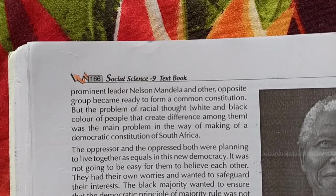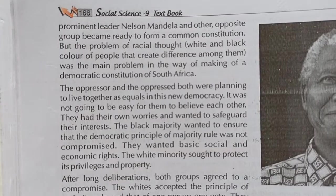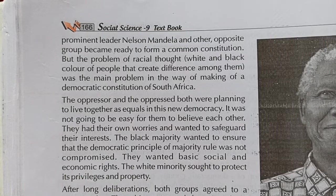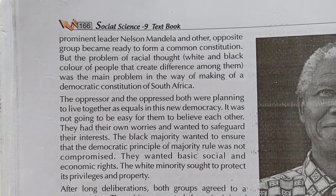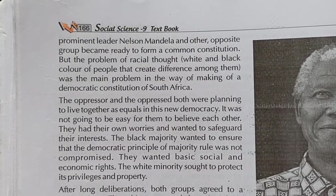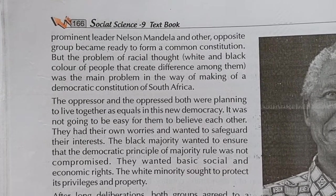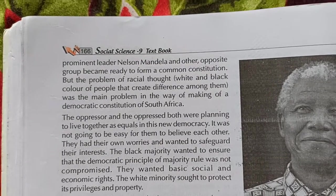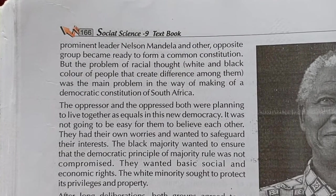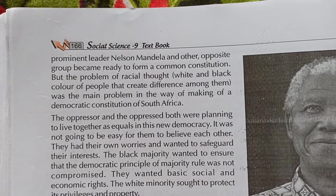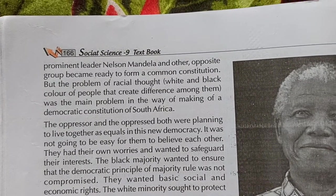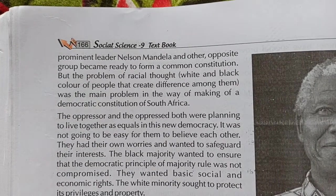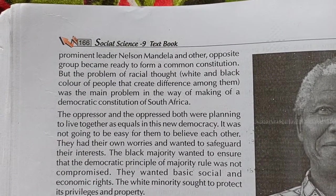After the long struggle of Nelson Mandela and their union, the opposite groups agreed to form a common constitution. But the problem of racial thought — the white and black color difference among the people — was the main obstacle in the way of making a democratic constitution in South Africa.